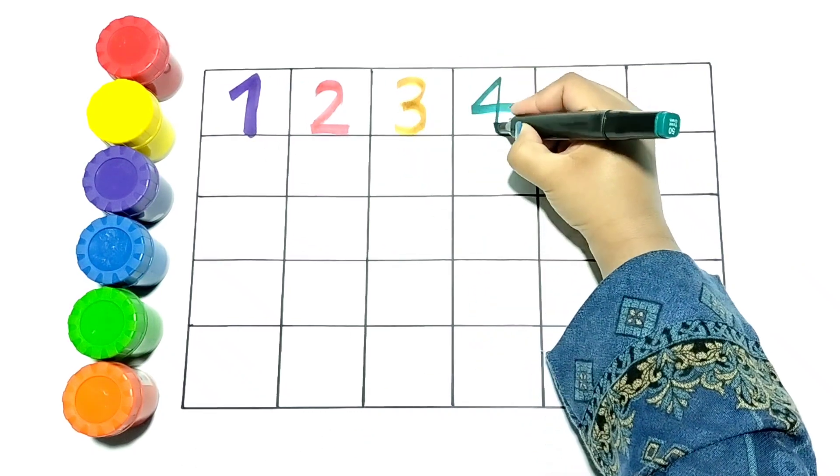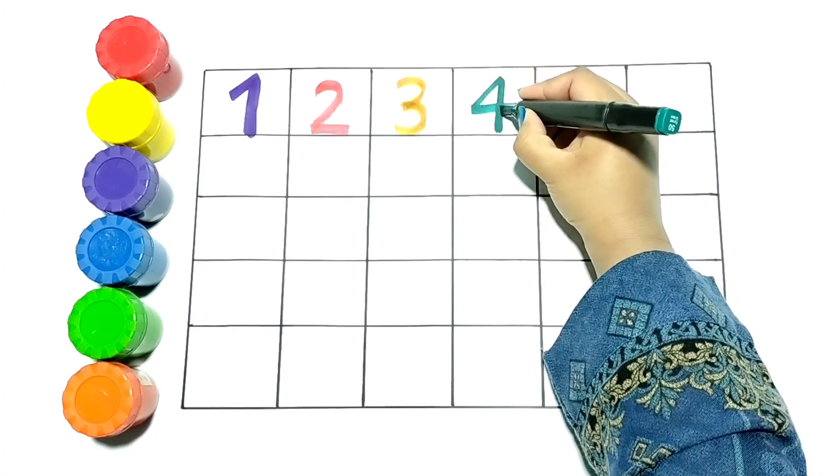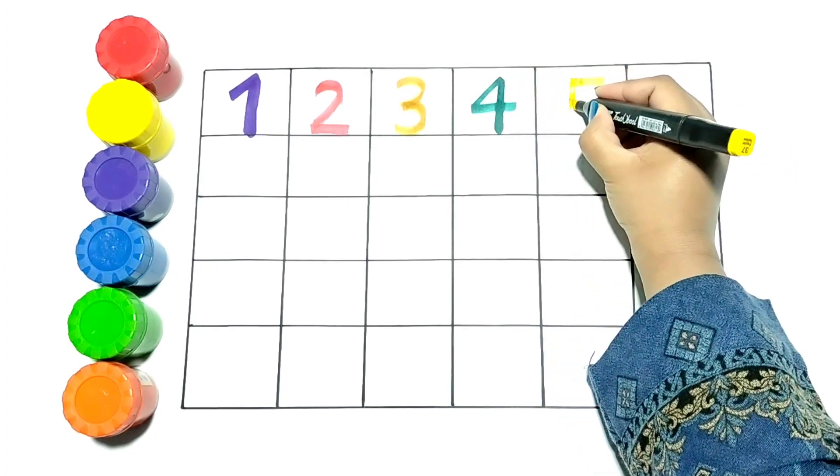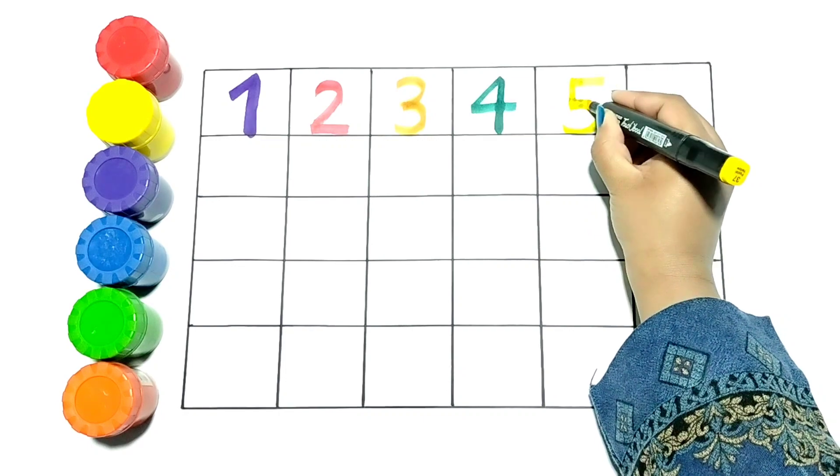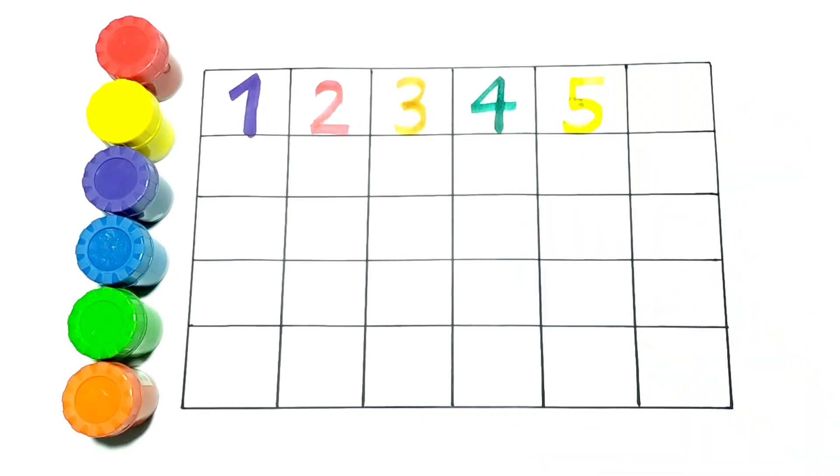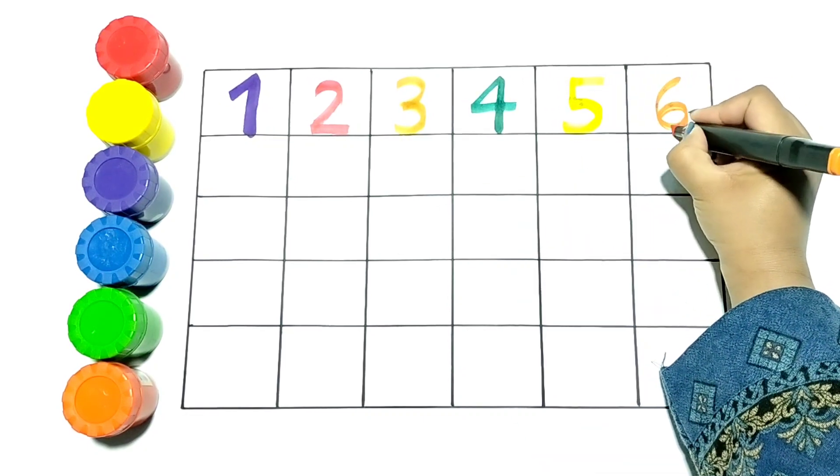This is number 4. I am writing it with green color. Next number is 5. I am writing it with yellow color. Now let's write 6 with orange color.